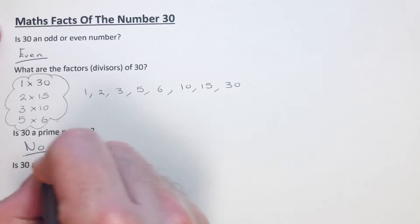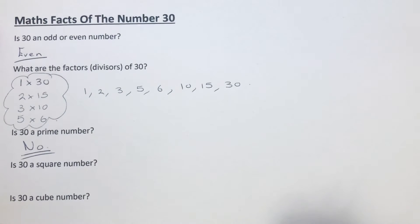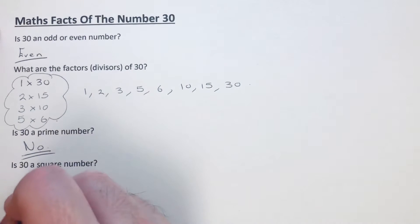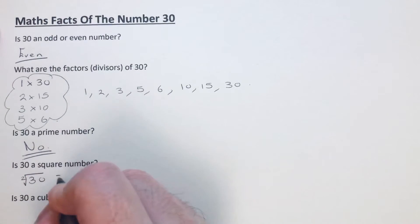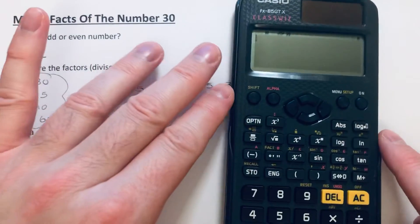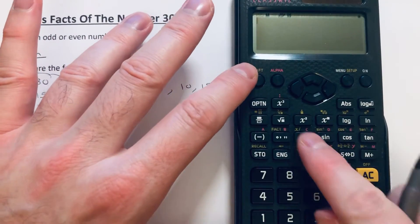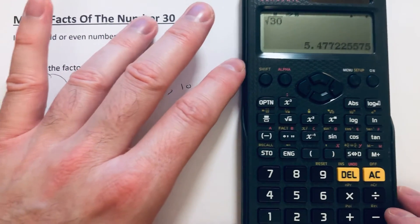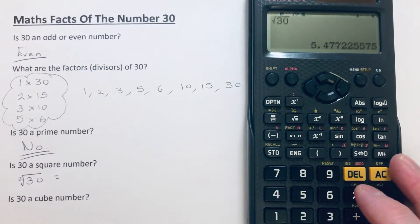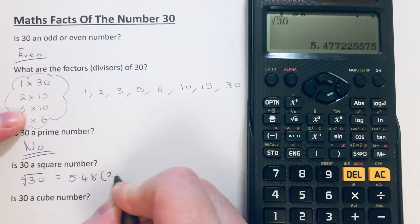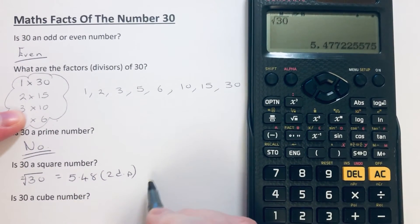So is 30 a square number? Well, if it's a square number, we should be able to square root 30 and it should come out as a whole number. Let's see what the square root of 30 is on a calculator. It's coming out as 5.48 to two decimal places, so the answer to this is no.